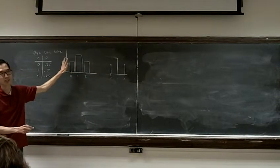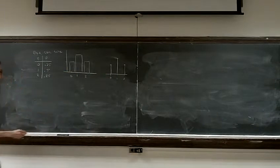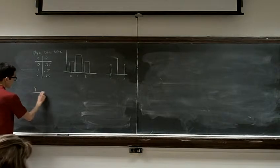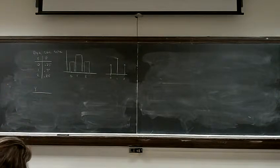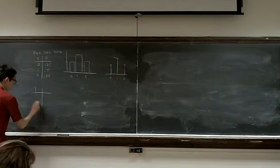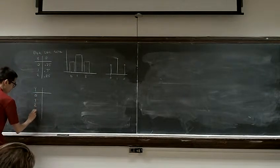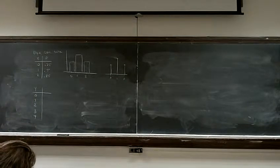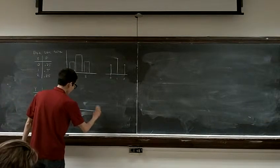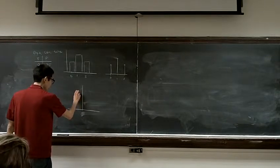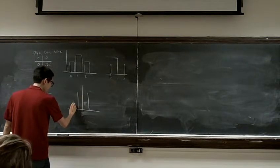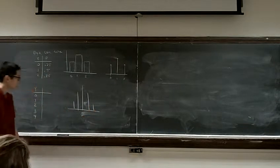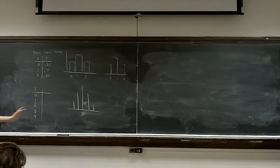And if we increase this, so let's say I flip the coin four times, 0, 1, 2, 3, or 4. Your probability thing is going to look kind of like this.